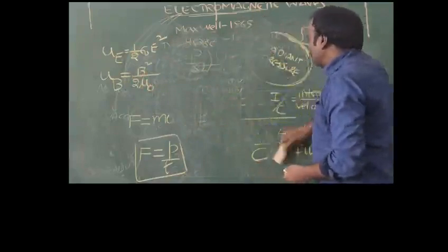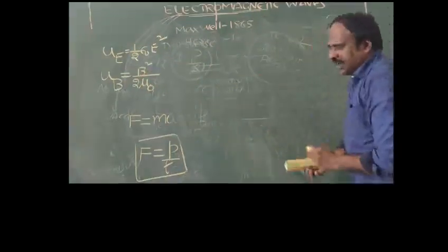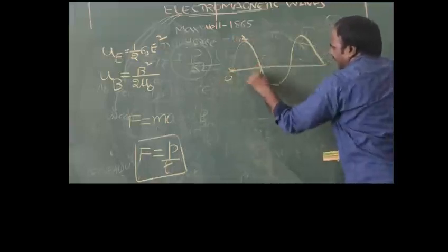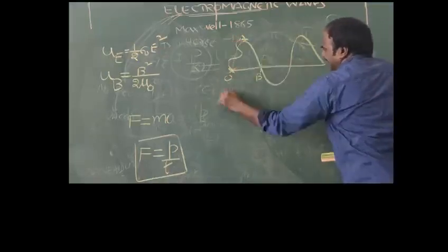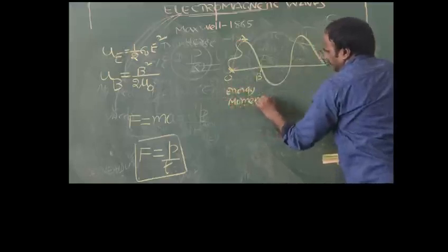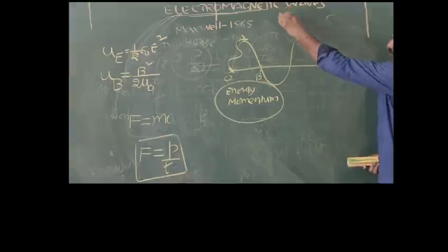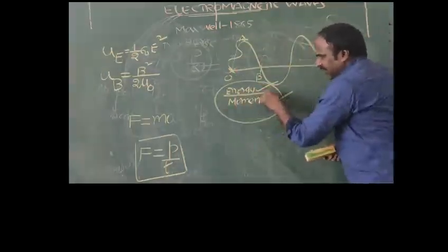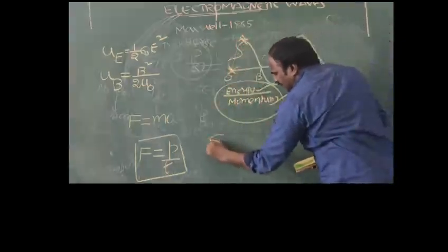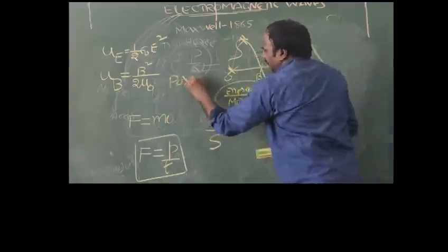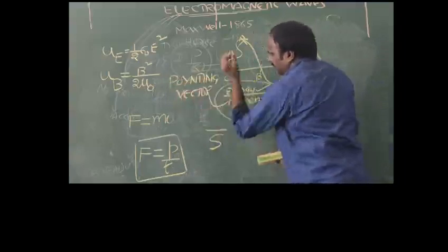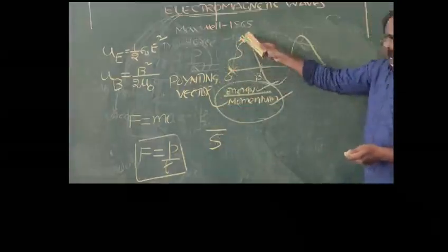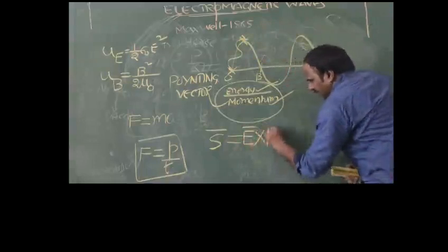These electromagnetic waves are used to transfer energy and momentum from one point to another point. The main purpose of electromagnetic waves is to transfer energy and momentum. Such energy transfer from one point to another is given by a vector S̄, called the Poynting vector, which indicates the flow of energy from one point to another.